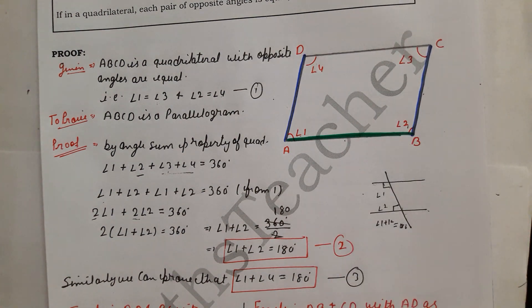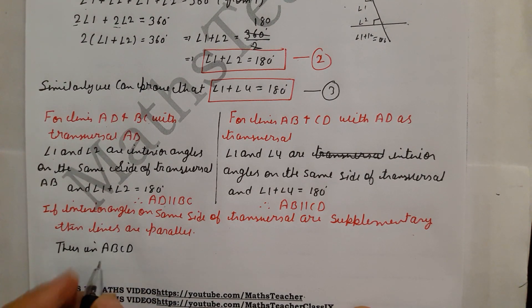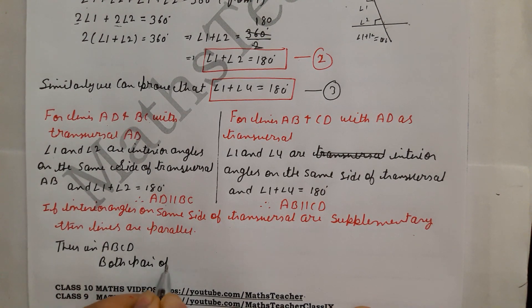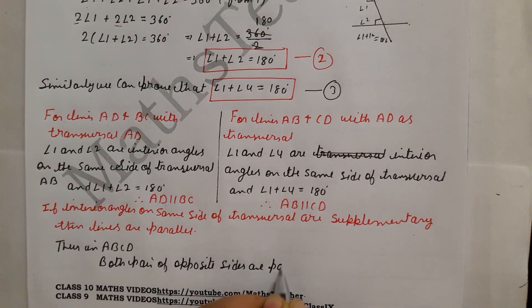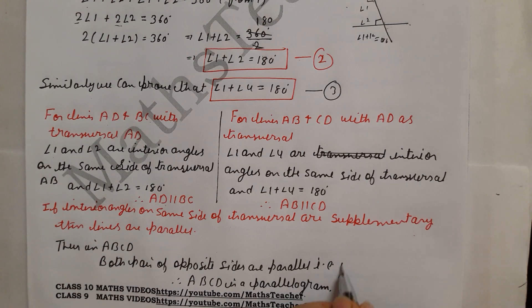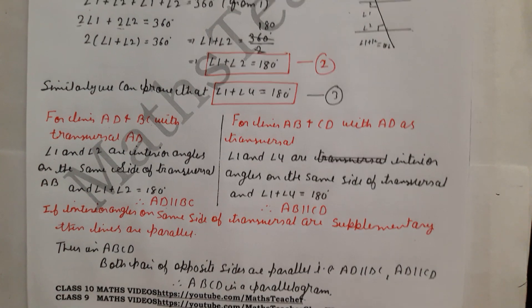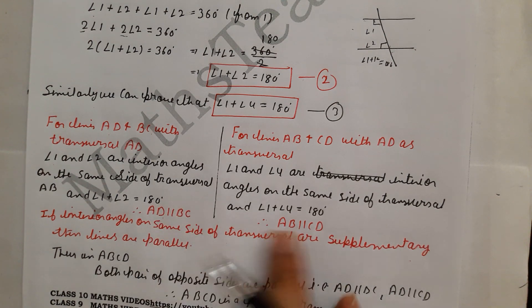Therefore since both pairs of opposite sides are parallel — AD is parallel to BC and AB is parallel to CD — quadrilateral ABCD is a parallelogram. Hence proved. To prove this theorem you need to show 180 degrees using the co-interior angle method and then both pairs of sides are parallel.